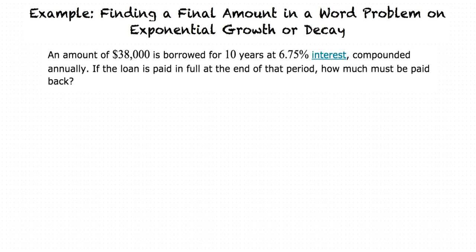An amount of $38,000 is borrowed for 10 years at 6.75% interest, compounded annually. If the loan is paid in full at the end of that period, how much must be paid back?